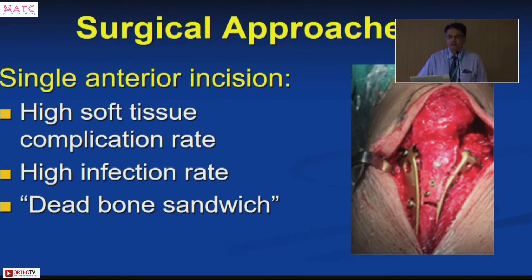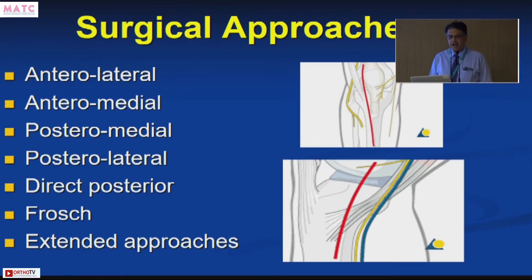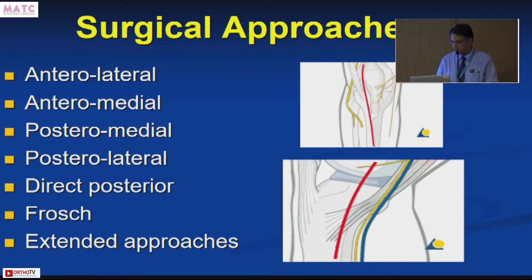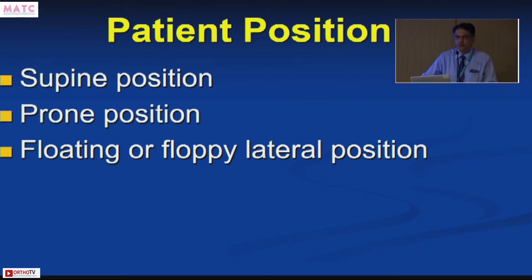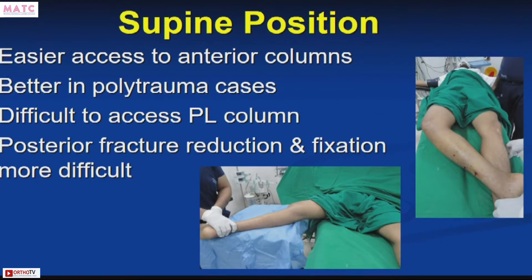Based on our improved knowledge of fractures, surgical approaches have improved. The single anterior approach in the early days, especially for bicondylar fractures, resulted in a lot of soft tissue stripping with a high complication rate. Newer approaches have been developed — anterolateral, anteromedial — and there are specific approaches for every possible column of the proximal tibia. The original conventional technique was performed with the patient in a supine position since fixation was limited to the anterior aspect.